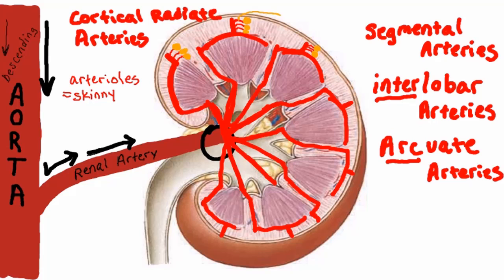Since these arterioles are going into the renal corpuscle, they are called afferent arterioles. The afferent arterioles are these tiny tree branches that branch off the cortical radiate arteries, and the renal corpuscles — containing the glomerulus — hang at the end of them, just like apples on a tree branch.